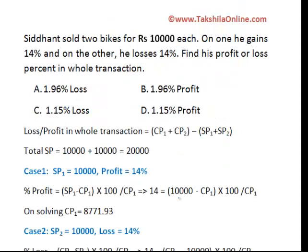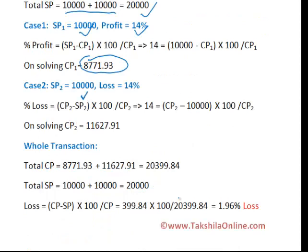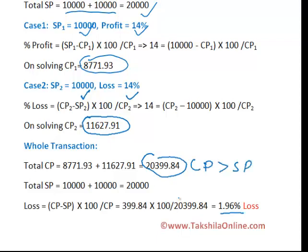Let's take a couple more examples to clear the concept. The same question with slightly different figures: Sidhan sold two bikes this time for rupees 10,000 each — on one he gains 14% and on another he loses 14%. Total selling price is 20,000. Solving the long way: in case one, selling price 10,000 and profit 14%, cost price is approximately 8,771.93. In case two, selling price 10,000 and loss 14%, the total cost price is higher than selling price — so there is a loss of 1.96%.